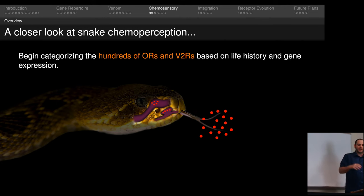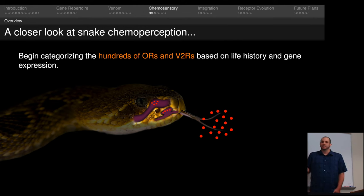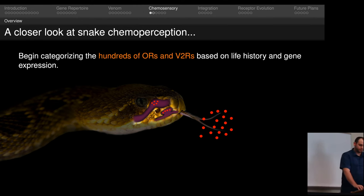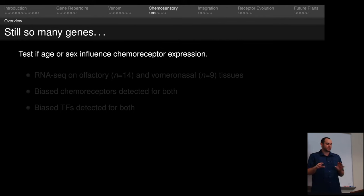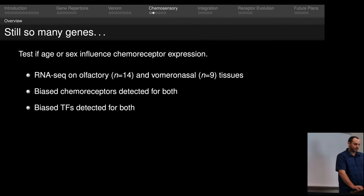To recap on this section, I wanted to know whether venom ontogeny can deepen our understanding of trait regulation. We found that venom expression and chromatin accessibility overlap with one another. We also found that transcription factor expression and motif distributions could be used to predict their function. Now turning our attention back to snake chemoperception, I wanted to try and begin characterizing the hundreds of ORs and V2Rs that I found based on life history and gene expression. Specifically, I tested to see if age or sex had any influence on the expression of these chemoreceptors. Just like venom, we looked at ontogeny, but I also added sex because we expect rattlesnakes to rely on chemical cues for some of the sex-specific behaviors. To do this, we performed RNA-seq on olfactory and vomeronasal tissues. We had a little bit better sampling for the olfactory because it was harder to figure out how to get the VNO samples. We found biased chemoreceptors in both of these tissues. We also found biased transcription factors in both tissues.